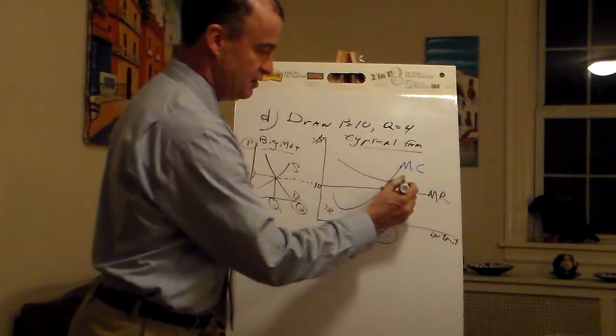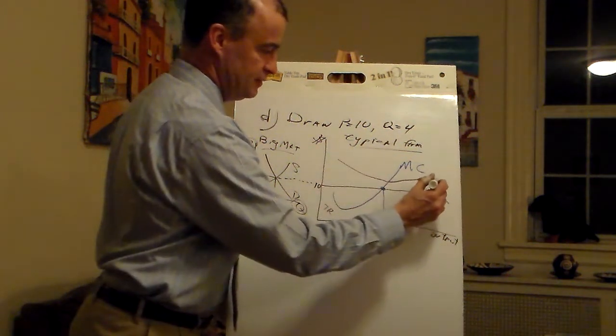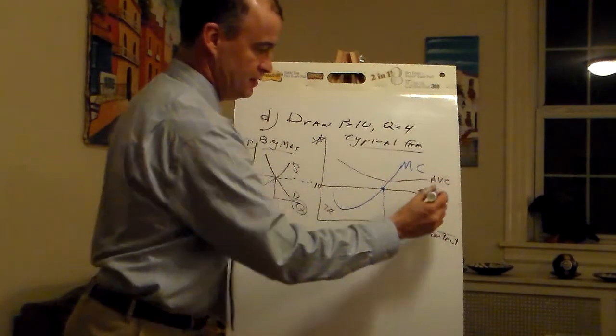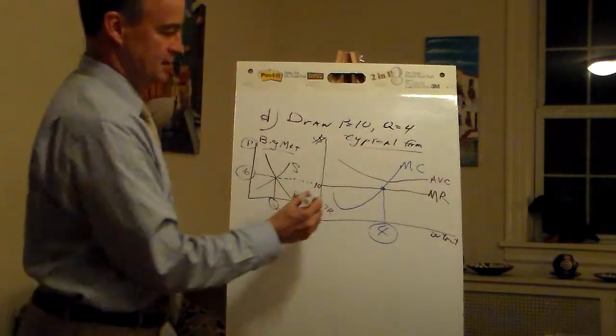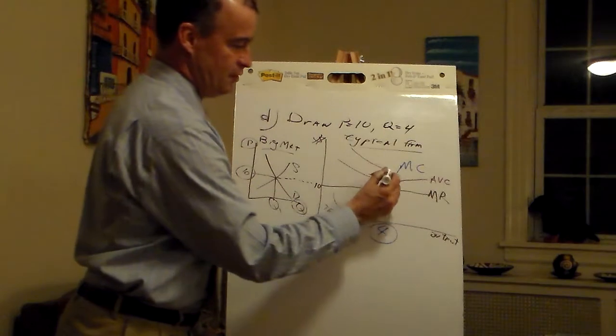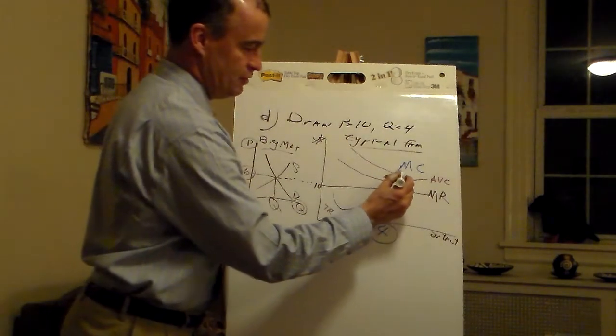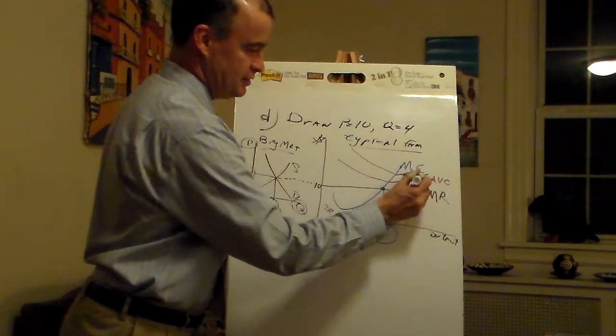I keep these lines above the marginal revenue line. First average variable and then average total.